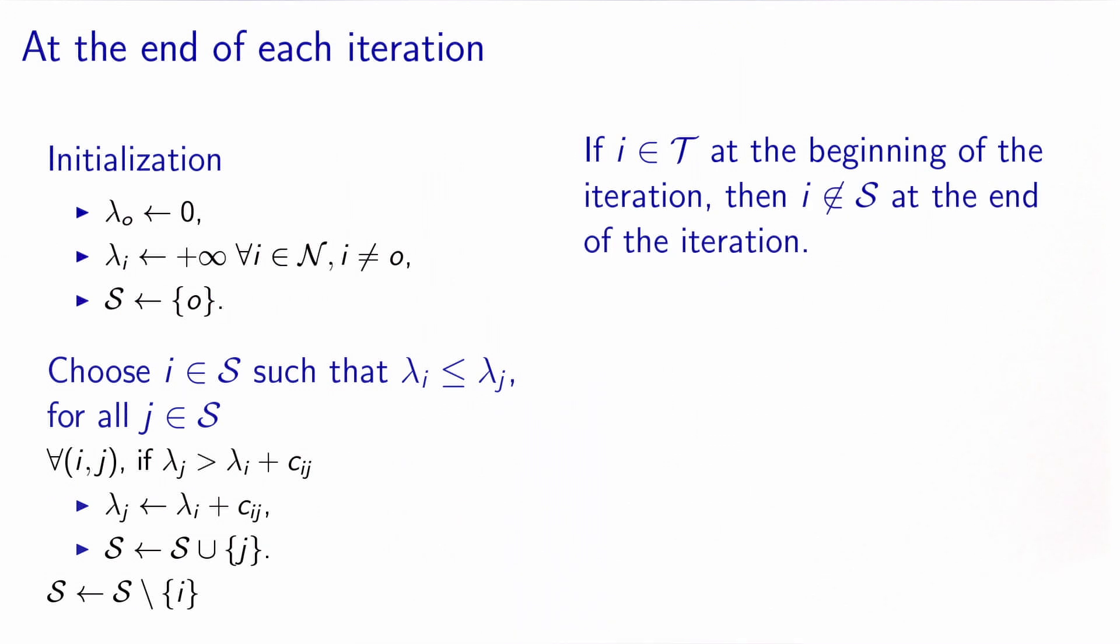As a direct consequence, because no label in T is updated, it means that they will not be added to S, because only labels that are updated here will be added to S. So if a node is in T at the beginning of the iteration, then it will not be in S at the end of the iteration.